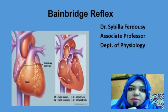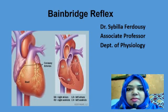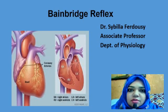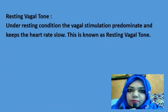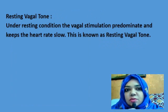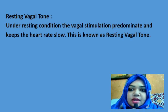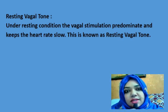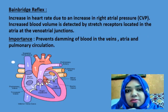Welcome to your online class. In this video I'm going to discuss the Bainbridge reflex and some short notes from the cardiovascular system. Let's start with resting vagal tone. Our heart rate is controlled by the autonomic nervous system — the sympathetic system increases heart rate and the parasympathetic system decreases it. Under resting conditions, parasympathetic predominance keeps the heart rate slow, which is known as resting vagal tone.